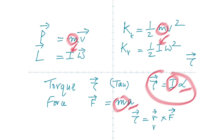In college physics, torque is R·F·sin(θ), where θ is the angle between R and F. Everybody knows it's easiest to open a door by applying force farthest from the hinges.